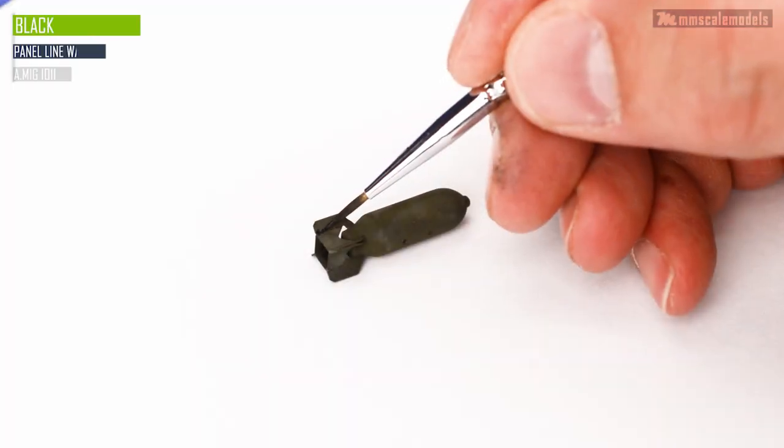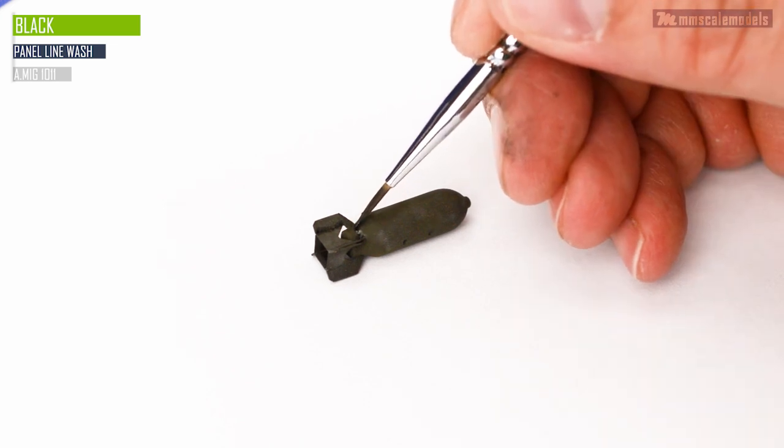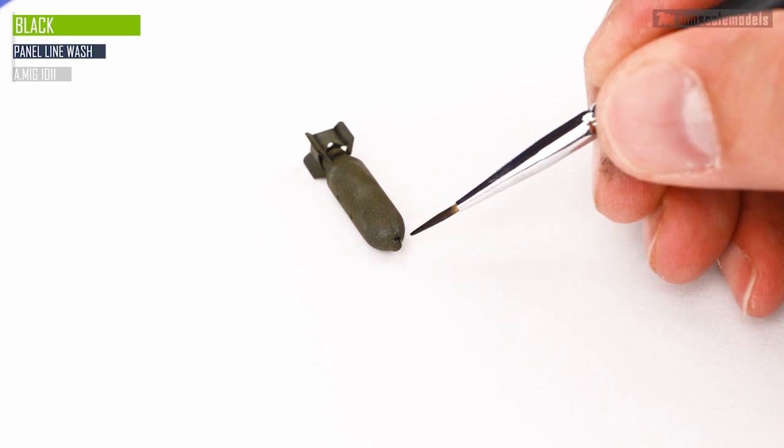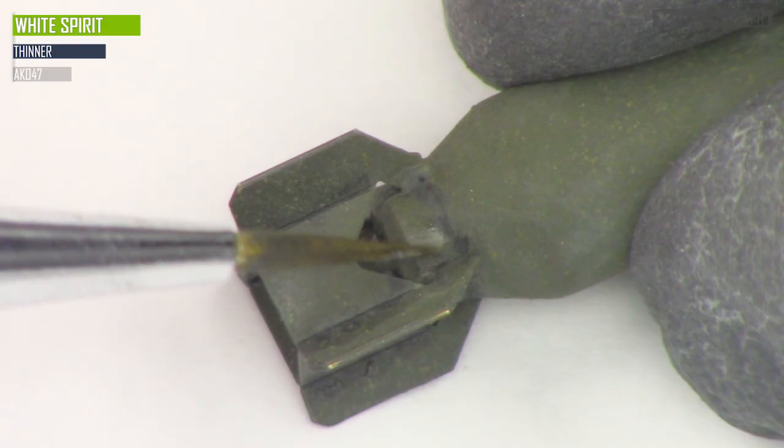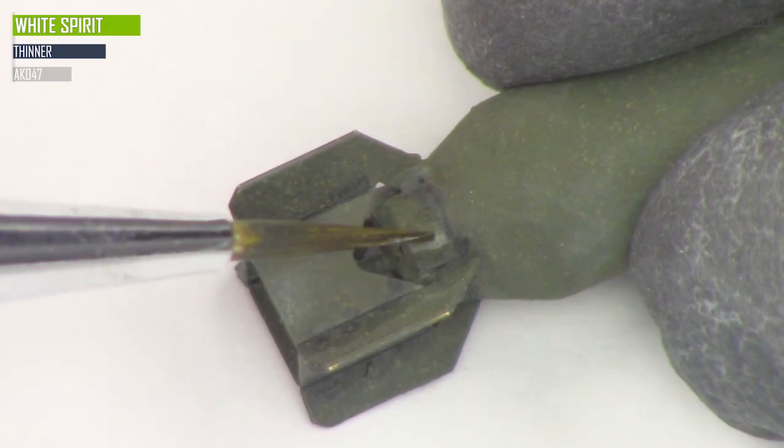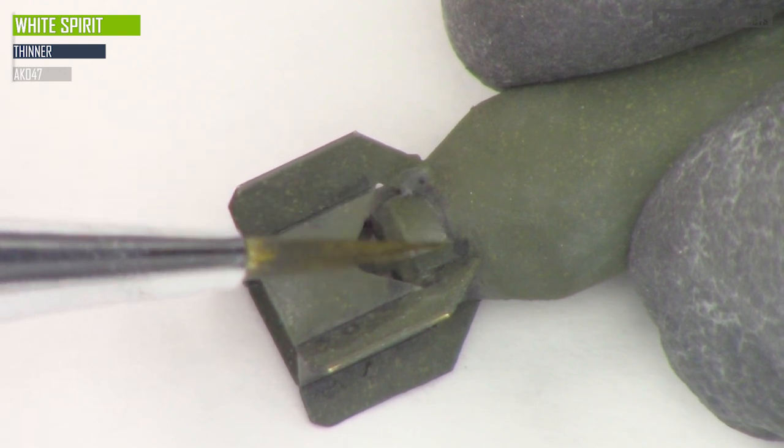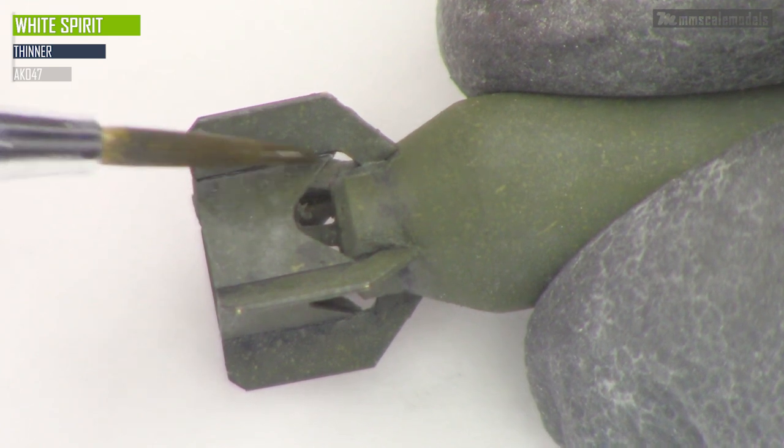Black NML wash was the next layer of weathering or rather shadow boosting. The wash was applied in the crevasses and corners mainly around the fins. I removed the excess wash using a fine brush dipped in white spirit. This is a more time consuming method of excess wash removal but it is much more precise than wiping the wash away and hoping that it will stay where it needs to.